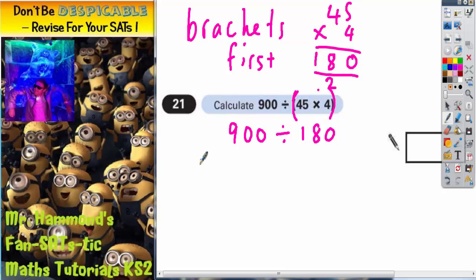So 1 lot of 180 would be 18 with a 0 on the end. 2 lots of 180 would be 2 eighteens with a 0 on the end, so 2 eighteens is 36, 0 on the end. Add on another 18 to that would be 54, so 3 eighteens would be 540. Add on another 18 to that, plus 10 would be 64, plus 8 would be 72. So 4 eighteens would be 720. Add on another 18, so add on 10 would be 82, add on another 8 would be 90. Put your 0 on, it's 900.